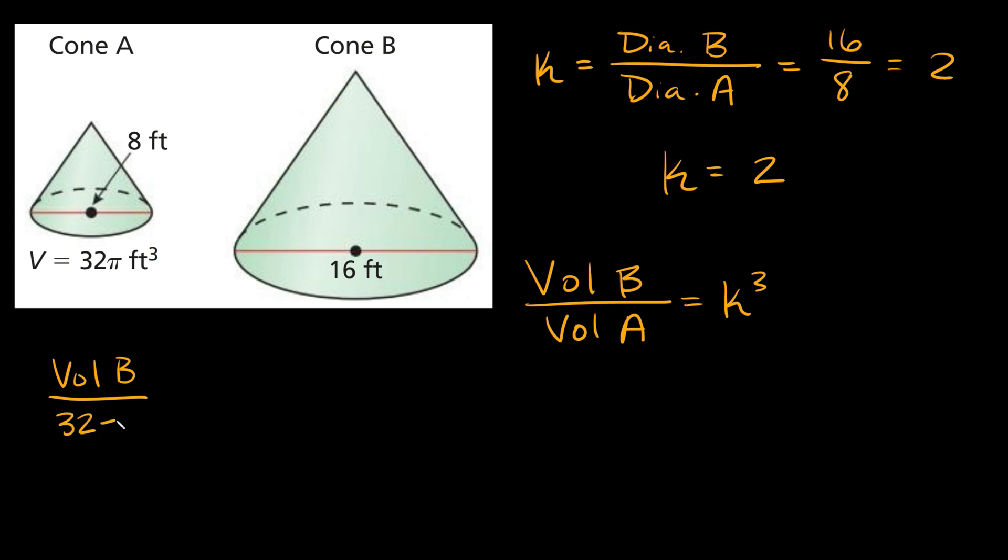It's 32 pi feet cubed. And again, you're going to set that equal to k cubed, which in this case, remember k is equal to 2. So here we're going to have 2 cubed.